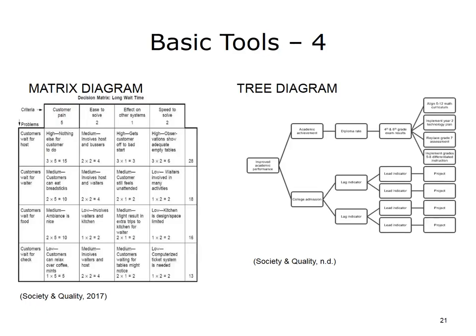A tree diagram helps to identify the tasks and methods needed to solve a problem and reach a goal. It creates a detailed and orderly view of the complete range of tasks that need to be accomplished to achieve a goal. The tree diagram can be used once an affinity diagram or interrelationship diagraph has identified the primary causes and relationships.